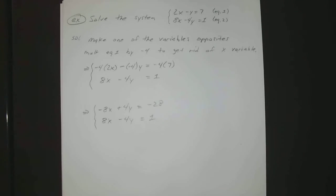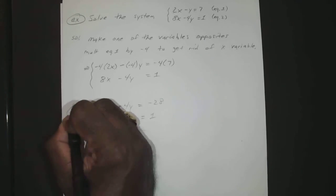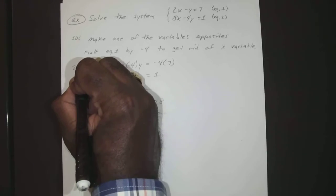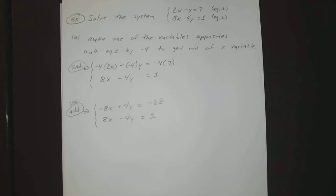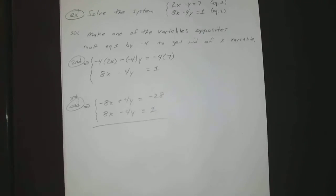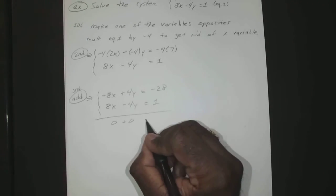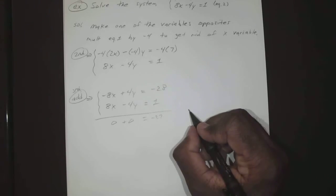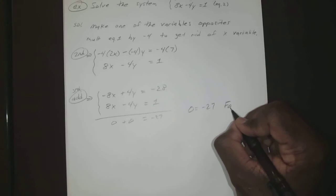Okay, so you probably notice that if you add them together, all variables disappear. So if you add them together, -8x + 8x is 0, 4y - 4y is 0, -28 + 1 is -27. So you have 0 = -27, which we know is false.